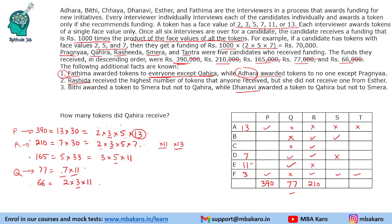Now figuring out the remaining token assignments. Prajna receives 2, 3, 5, 13 — with 13 from Adhara and 3 from Fatima confirmed, the remaining two come from Bithi and Chaya, whose token values are 2 and 5 (in some order). Prajna cannot receive 7 or 11.